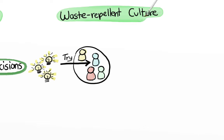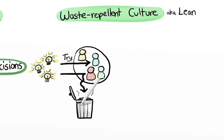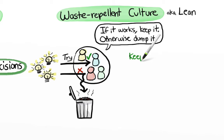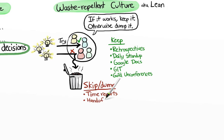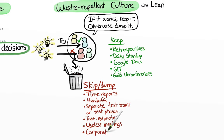Although we are happy to experiment and try different ways of doing things, our culture is very waste-repellent, or lean if you prefer. That means people will quickly stop doing anything that doesn't add value. If it works, keep it. Otherwise, dump it. For example, some things that work for us so far are retrospectives, daily stand-ups, Google Docs, Git, and Guild on conferences. And some things that don't work for us are time reports, handoffs, separate test teams or test phases, and task estimates. We mostly just don't do these things. We are also strongly allergic to useless meetings and anything remotely near corporate BS.